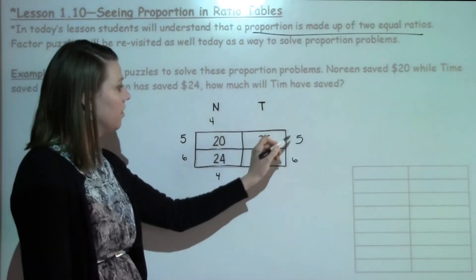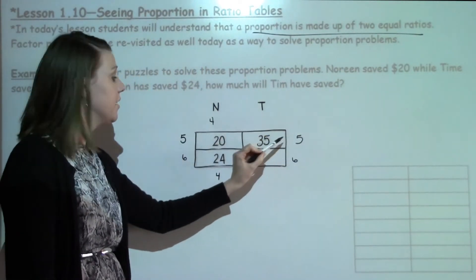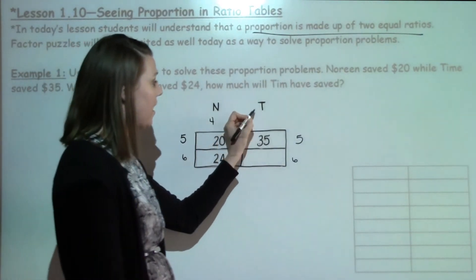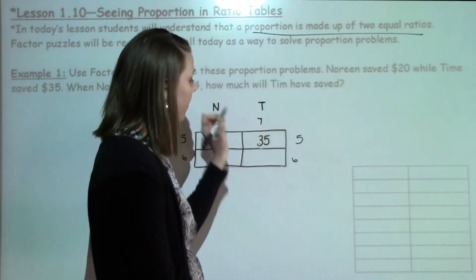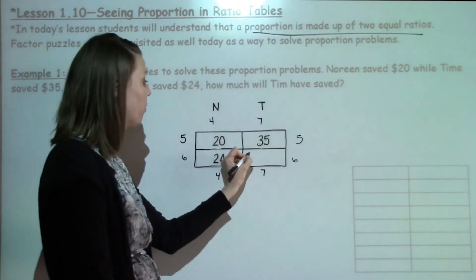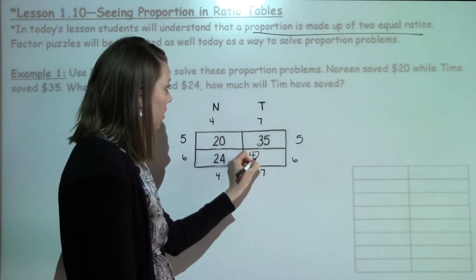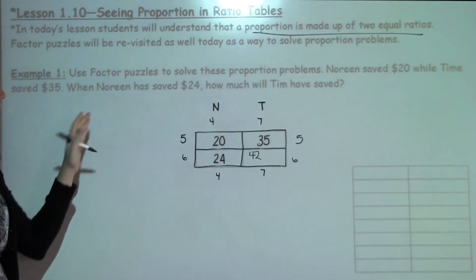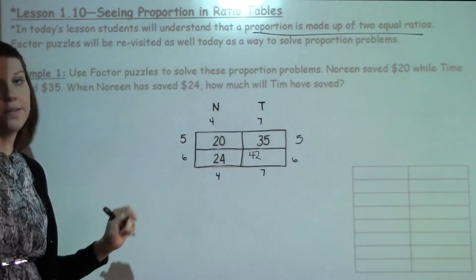Now I need to look over here and see what I know. I've already got my 5 listed. 5 times something gives me 35. That's 7. Once I have my 7, I can pop that down over here and 6 times 7 is 42. So when Noreen has saved $24, Tim will have saved $42.